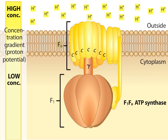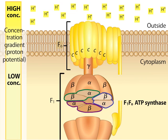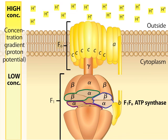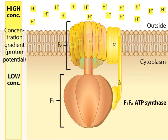Surrounding the gamma subunit in F1 are three pairs of alpha and beta subunits, which serve as the sites of ATP synthesis. Other subunits designated A and B connect the F1 knob to the membrane. The proton gradient across the membrane drives F0 to rotate.